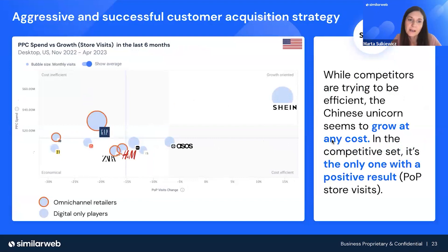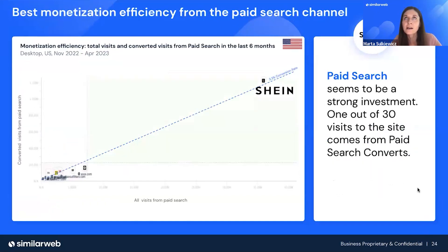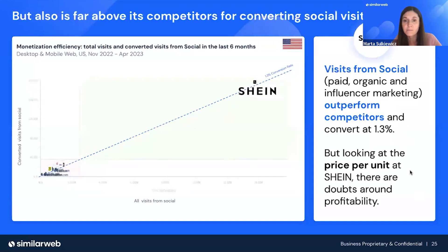Shein is absolutely a growth-oriented brand — very aggressive and successful in customer acquisition. They invest a lot in PPC spend and are the only player to notice growth. Looking at the six months from November to April compared to the previous six months, all other players showed a decline, while Shein actually increased traffic by 15%. But this is not growth at any cost — Shein has absolutely the best monetization efficiency in the entire category, and is able to convert many more visits than anybody else in the market. They just play in a different league.